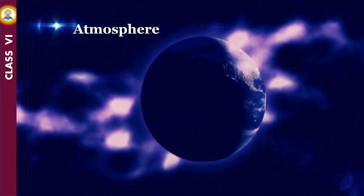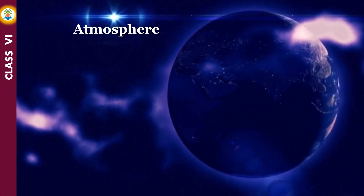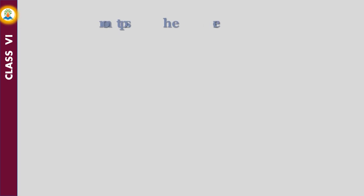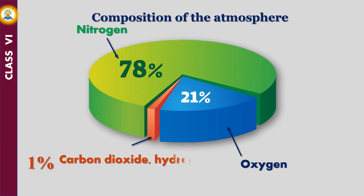The earth is enveloped by a thin layer of air called the atmosphere. The atmosphere is held to the surface of the earth by the planet's gravitational force. It consists of nitrogen, which is the most abundant gas, constituting 78% of it. Oxygen constitutes 21%. The remaining 1% is made up of gases such as carbon dioxide, hydrogen, argon, helium, and ozone.